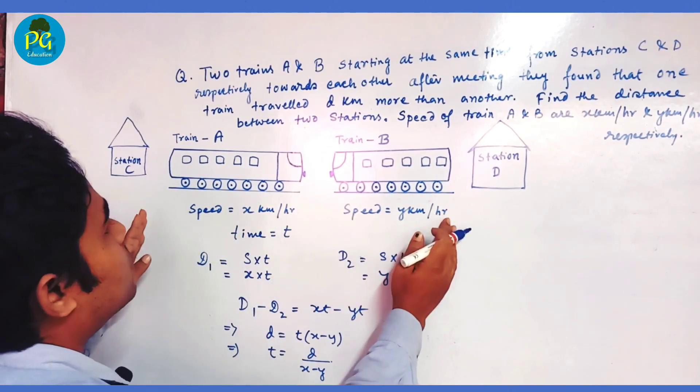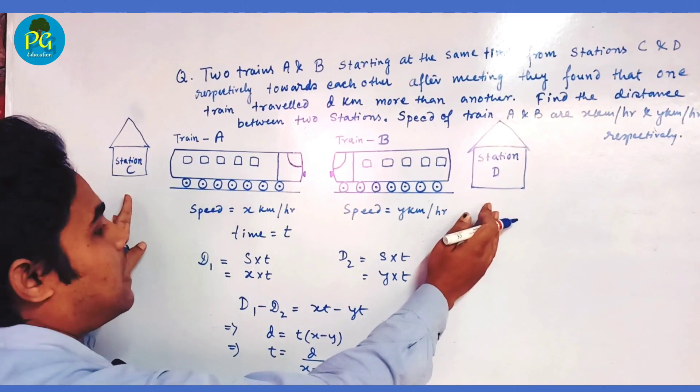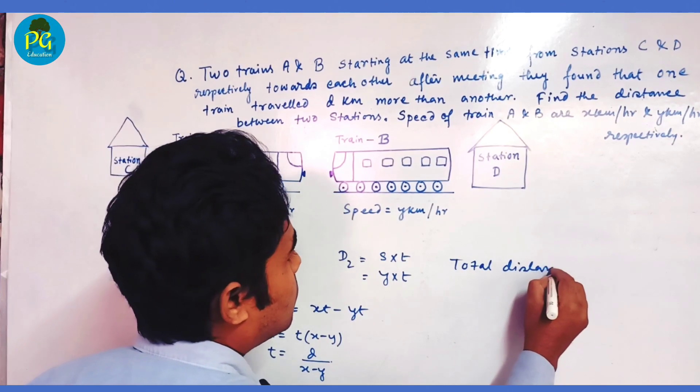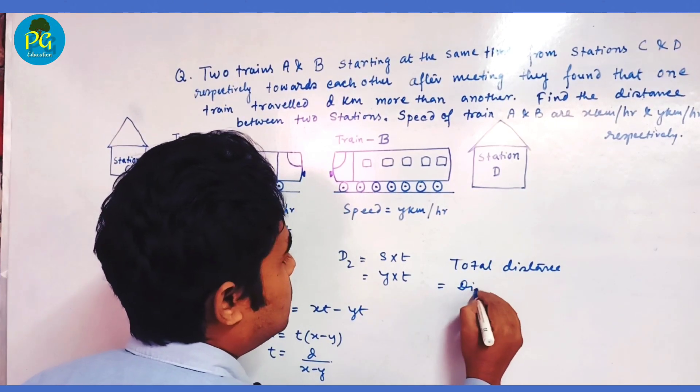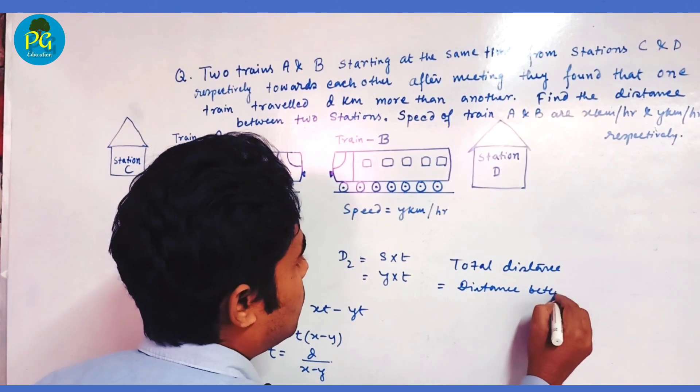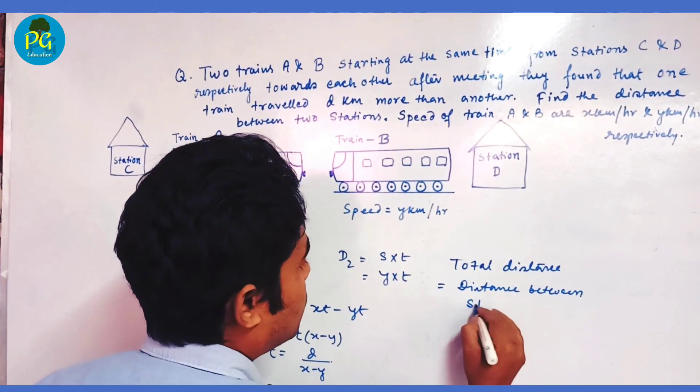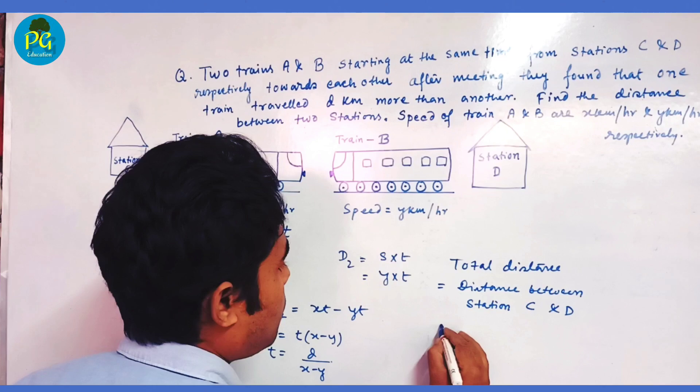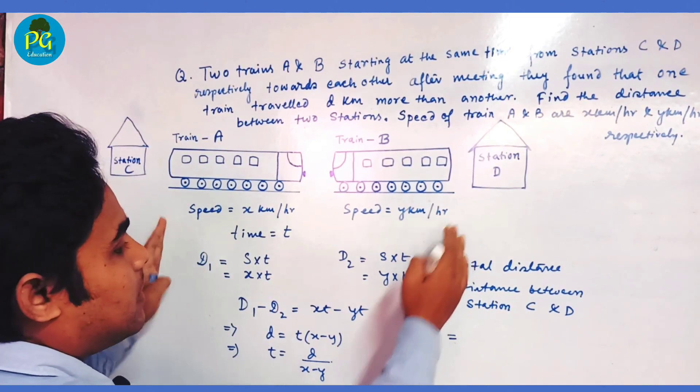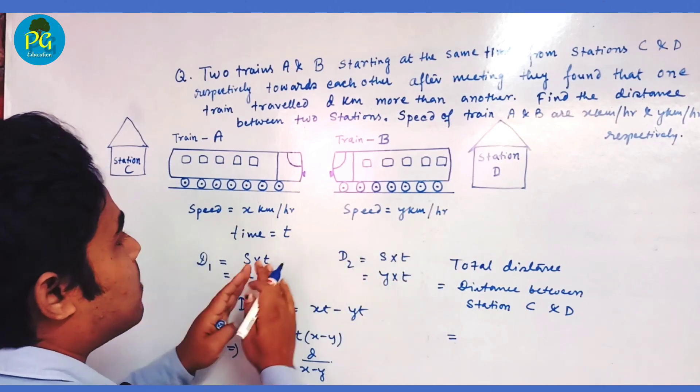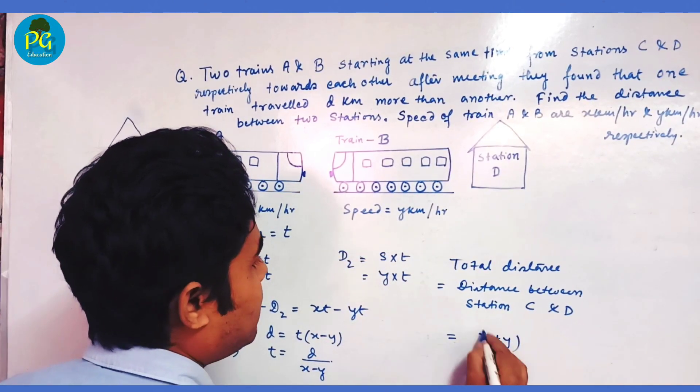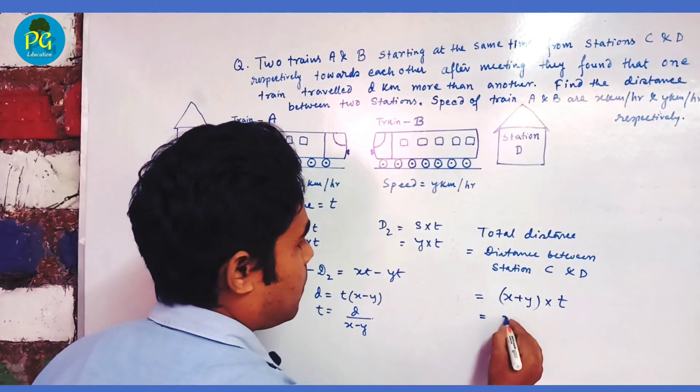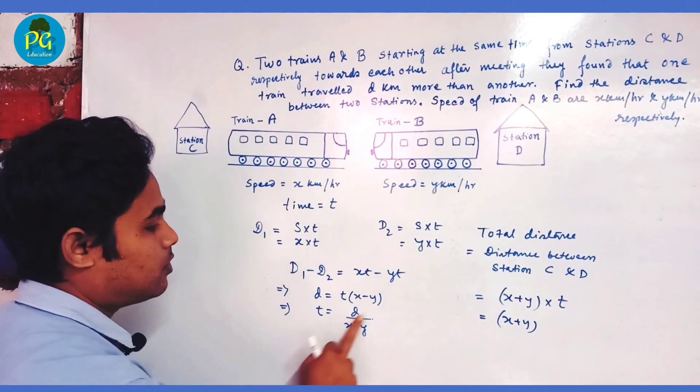Now, total distance traveled by the two trains equals the distance between the two stations C and D. Therefore, total distance equals distance between station C and D, which equals the relative speed times time. The relative speed is X plus Y, as they are moving toward each other. From here we have T equals D divided by (X minus Y), so the total distance equals (X plus Y) divided by (X minus Y) times D.